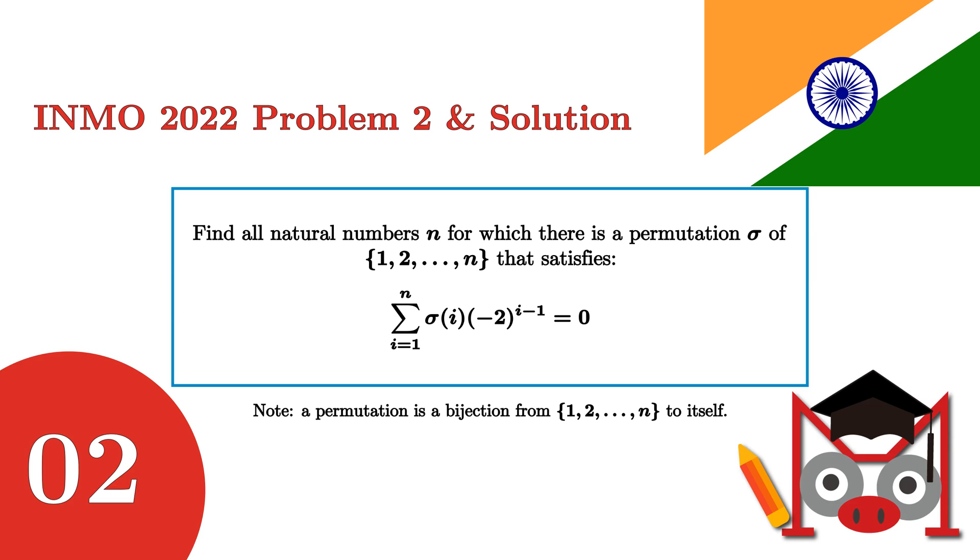For those of you who are less familiar with the permutation, what it is essentially saying is that each number between 1 to n must appear once and only once within the sigma.